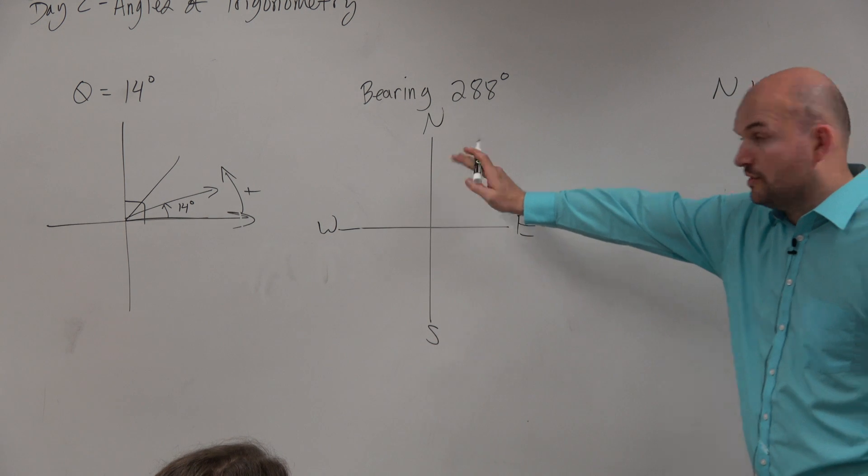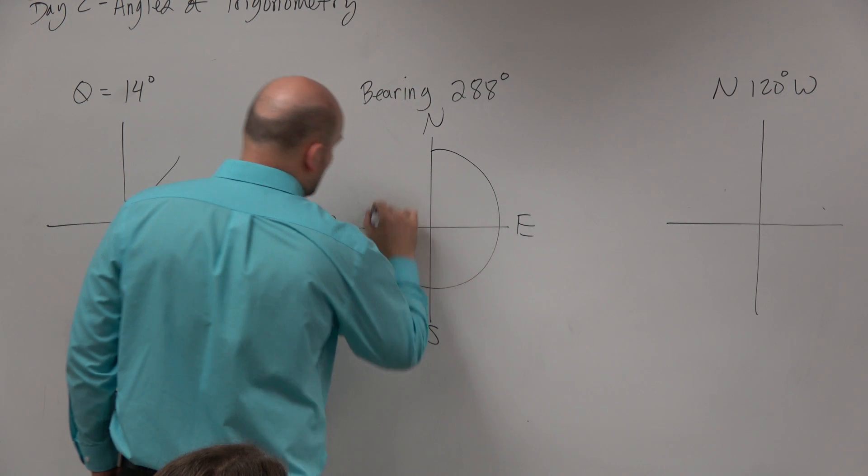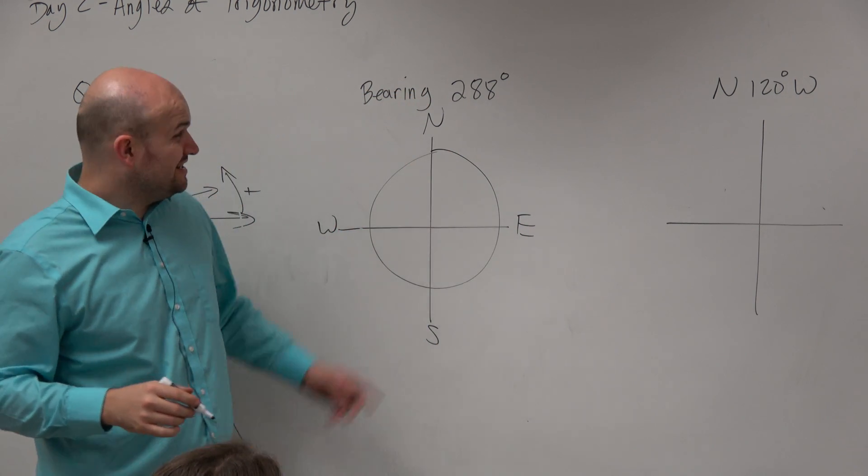Now, I'm going to start at due north, and we need to go 288 degrees. I know, Robert, all the way around is 360. I don't need to get to 360, though.